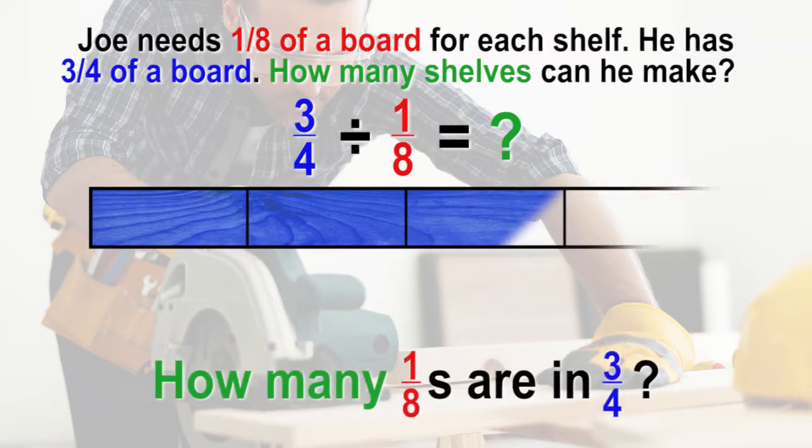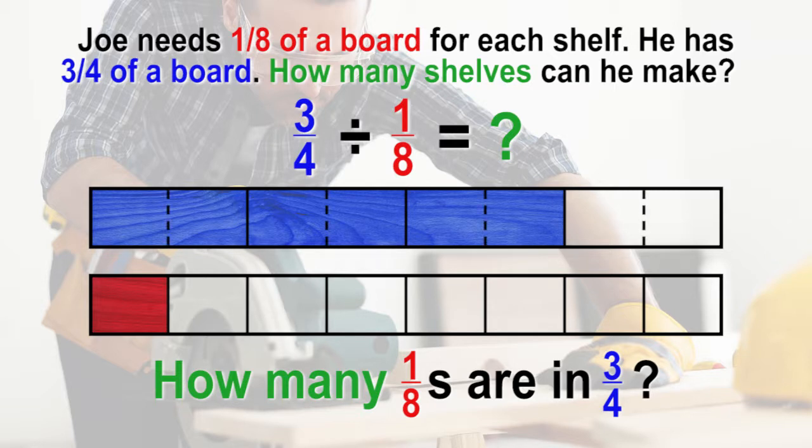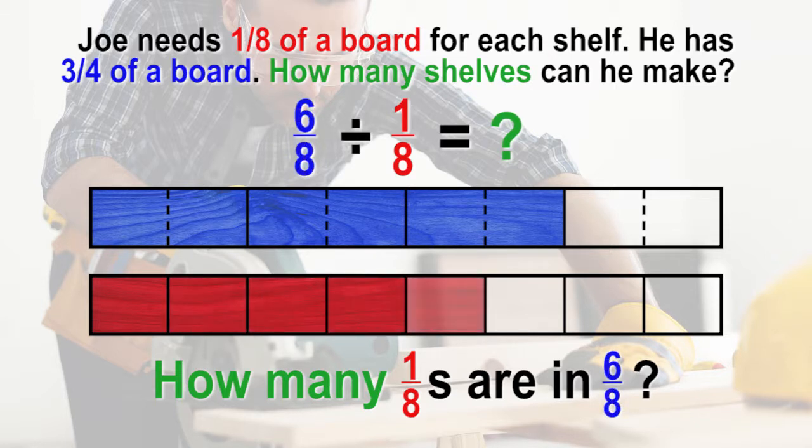Here is what a bar model might look like. Underneath that bar, we can represent 1/8 by partitioning the same size bar into eight units and shading in one of the eighths. Notice it takes two of the one-eighths to make one-fourth, so we can partition the 3/4 bar into eighths, making the equivalent fraction of 6/8, then count the number of eighths in 6/8. We have made each of the fourths into eighths, creating a common unit to be compared. There are six one-eighths in 6/8, so Joe can make six shelves with 3/4 of his board.